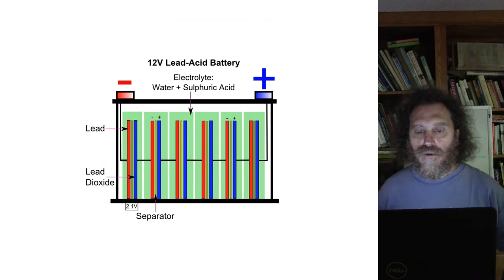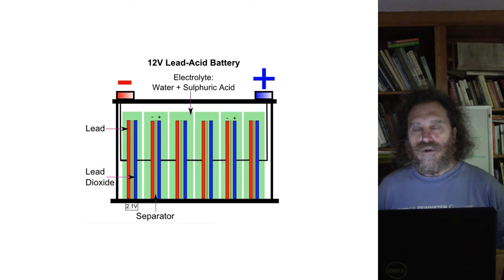A lead acid battery, again, there's multiple cells in a row. One of these cells produces a little over two volts. So we put six of them in a row. You get a 12 volt battery and car electrical systems are designed to operate on 12 volt electricity. So this is a good chemistry for powering electrical systems in cars.